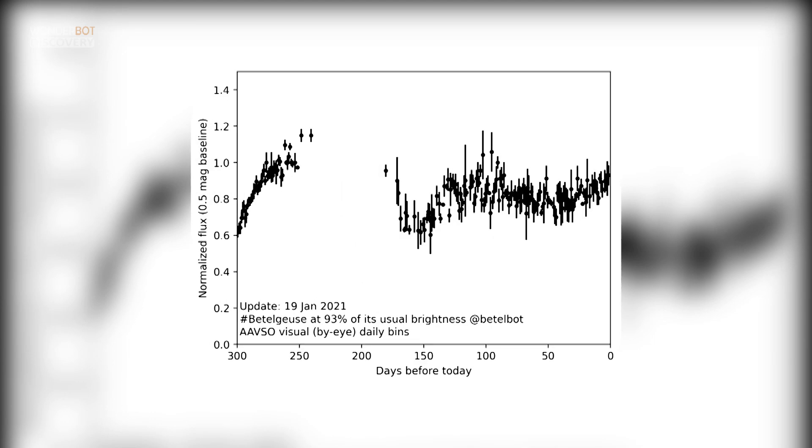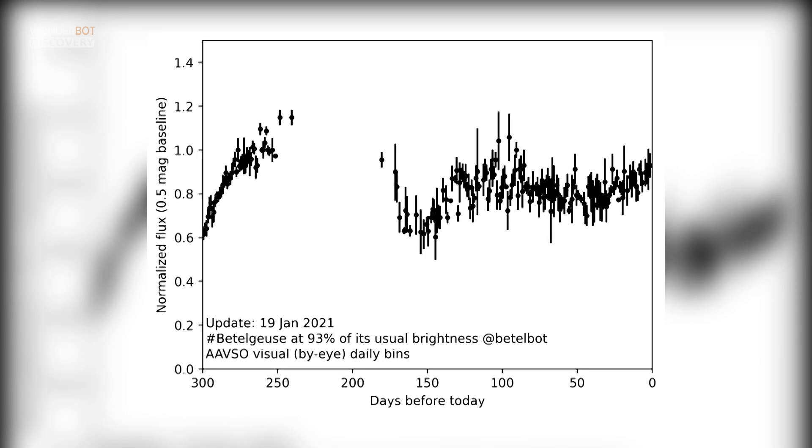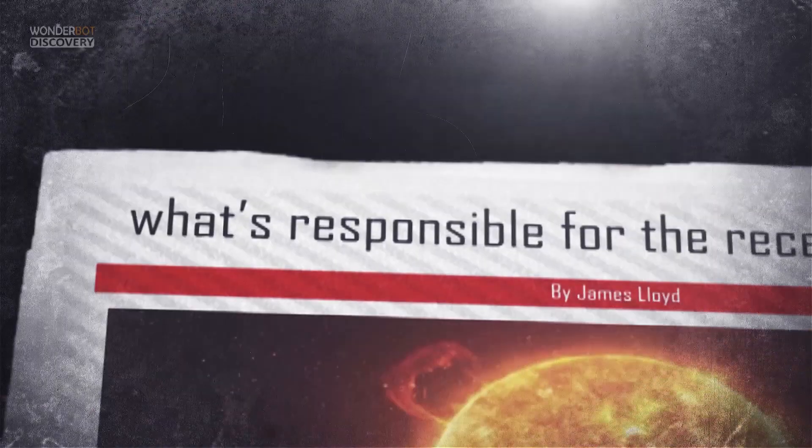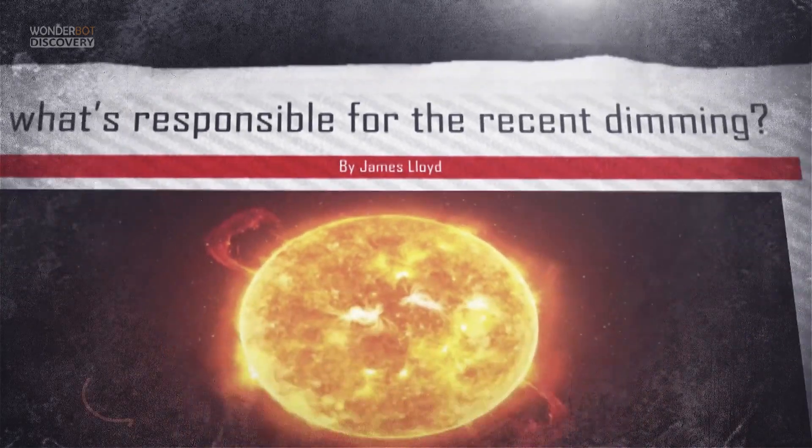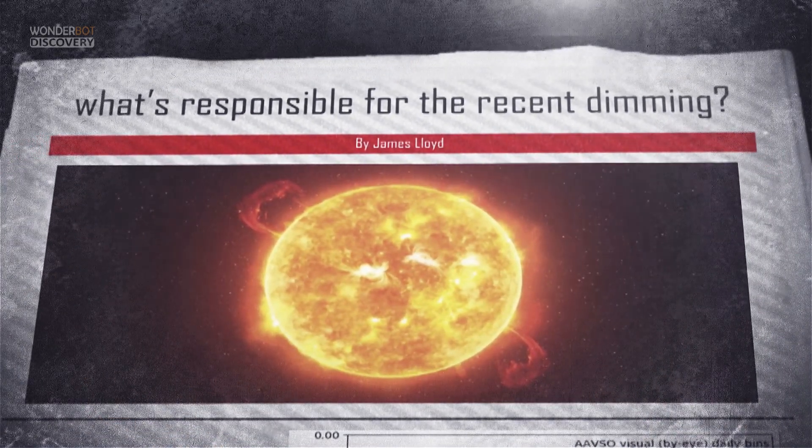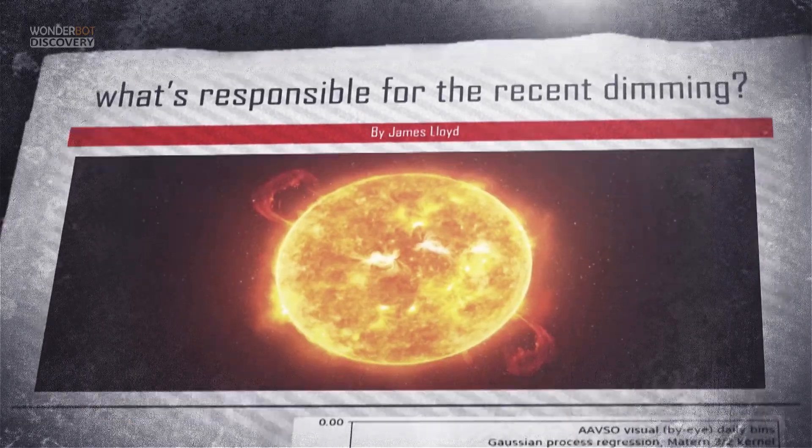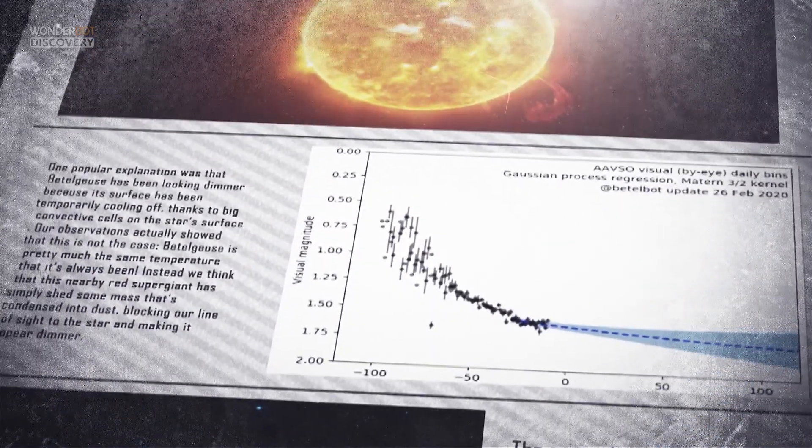One possibility is that the star is being obscured, making it appear dimmer. We know that stars like Betelgeuse periodically shed mass from their surface, which condenses into dust around the star, she says. This would effectively block our view.